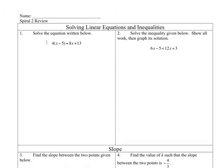My first problem, I noticed that I have something with distribution on the left and an x on both sides. I'm going to begin with that distribution. 4 times x is 4x. 4 times negative 5 is negative 20. That's equal to 8x plus 13.